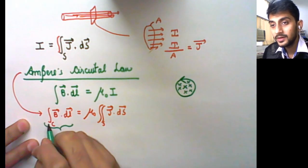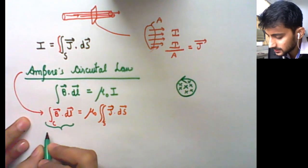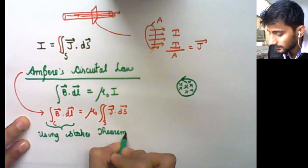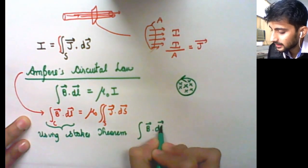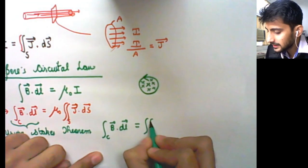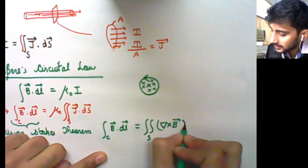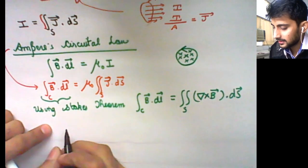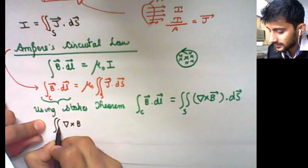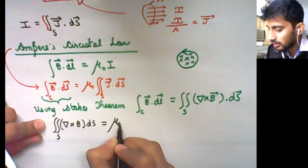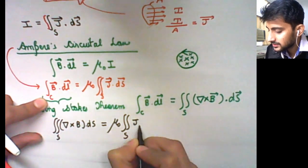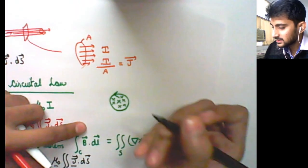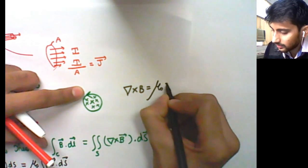The line integral of the magnetic field is equal to the surface integral of the curl of the magnetic field. If you equate the two, you get that del cross B, surface integrated over an open surface, is equal to mu naught times the surface integral of J dot dS. Comparing the two sides, del cross B equals mu naught J.